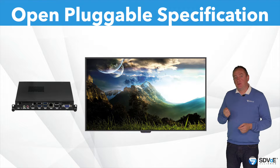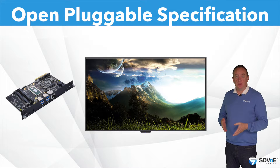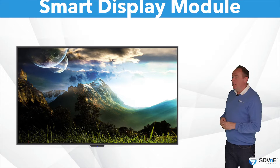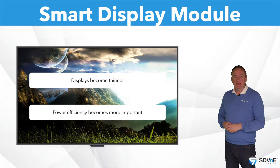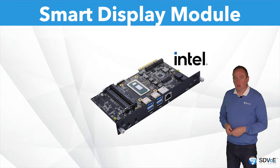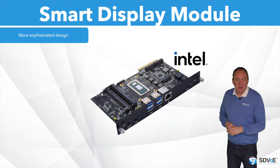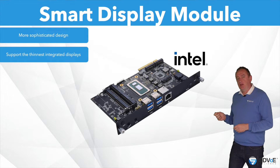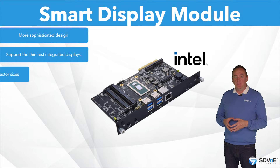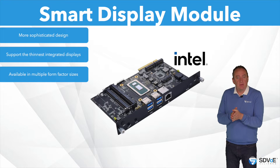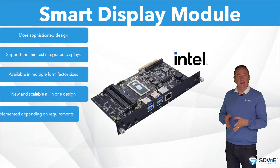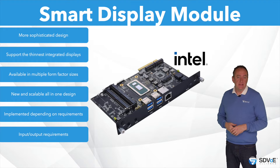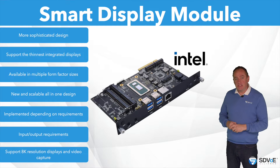Later development saw the OPS module being superseded by the SDM, or smart display module, which offered more than just digital signage functionality. As displays became thinner and power efficiency became more important, the Intel smart display module provides a more sophisticated design within a smaller form factor to support even the thinnest integrated displays. Unlike its predecessor, the smart display module is available in multiple form factor sizes, allowing for new and scalable all-in-one designs to be implemented depending on power management, input/output requirements, processing capability, and future capabilities to support things like 8K resolution displays and video capture.